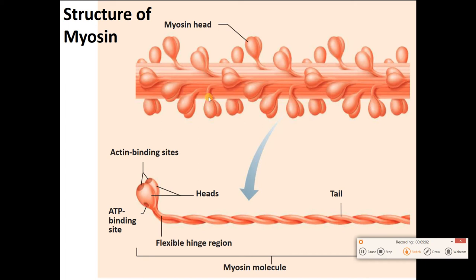Let's look at actin and myosin. This is the myosin thick filament. This is an individual myosin molecule — to me it looks like two golf clubs that have had their shafts twisted together. There's the tail, a bendy part, and the heads. The heads have two important parts: a part that binds to ATP so they can break down ATP and use its energy for contraction, and a part that binds to the other contractile protein, which is actin — these are actin binding sites.